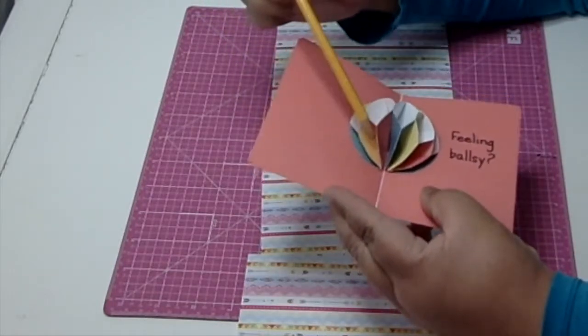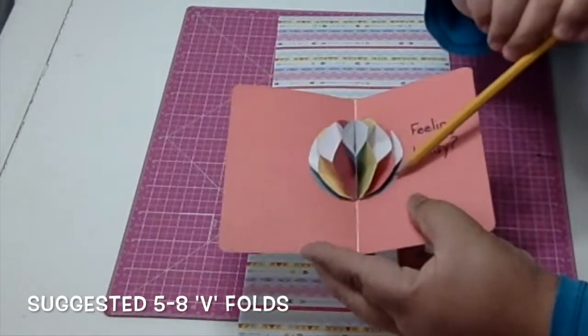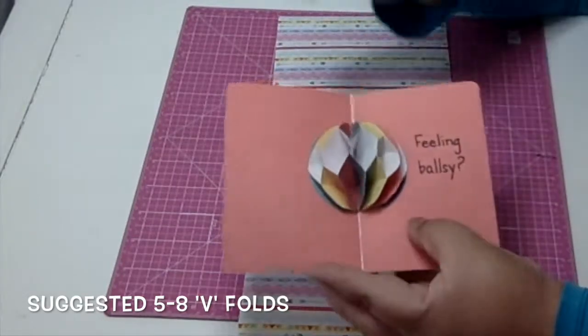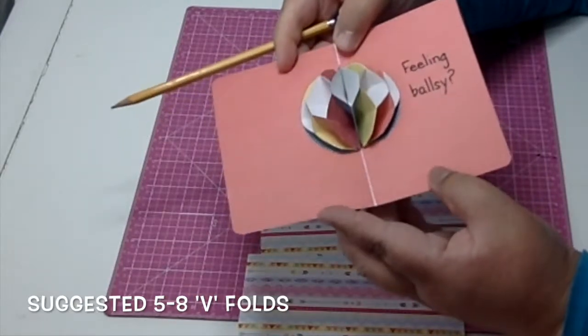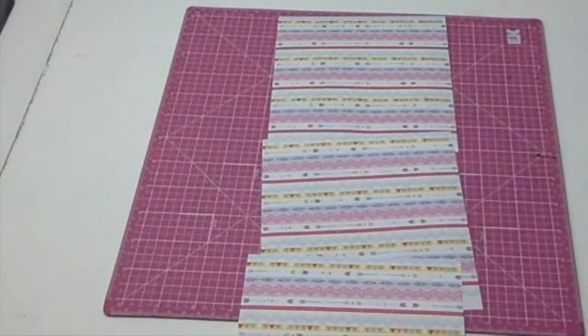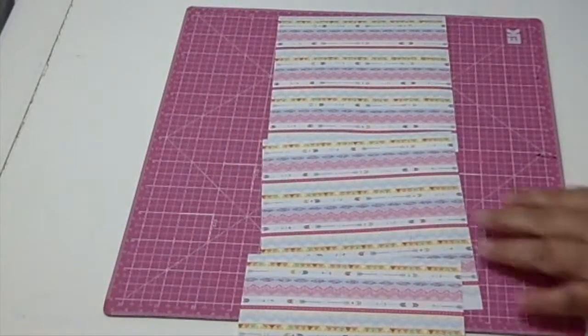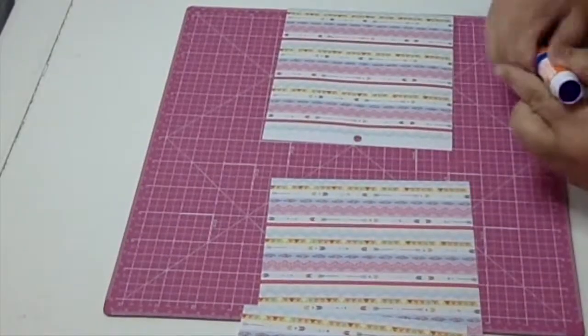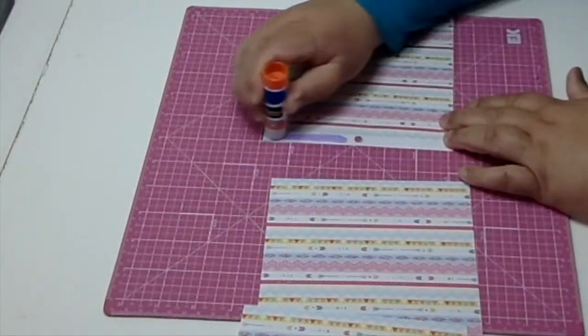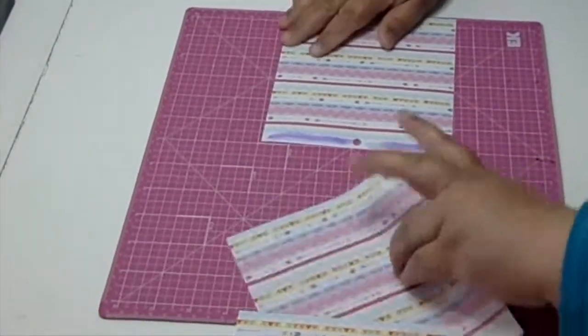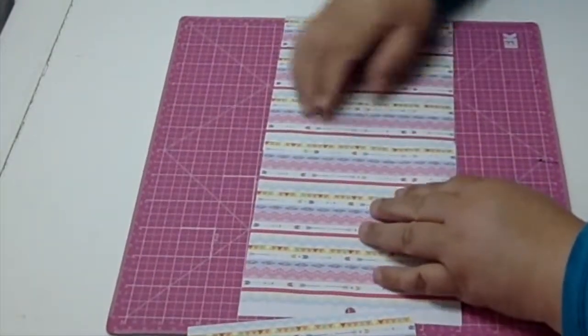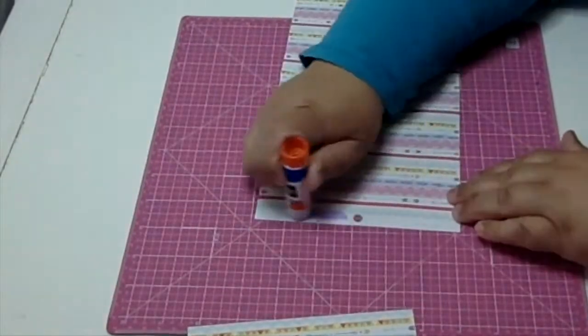So in my example here I have six V folds. I suggest that you make at least five V folds and only a maximum of up to eight V folds in your card, mostly because you have to cut through it to make your shape.